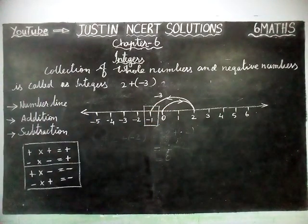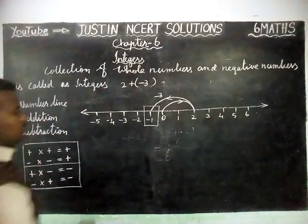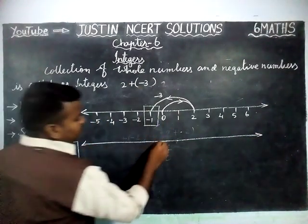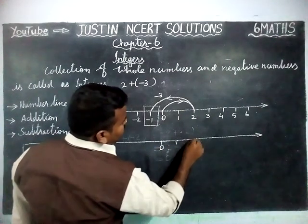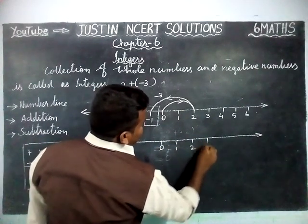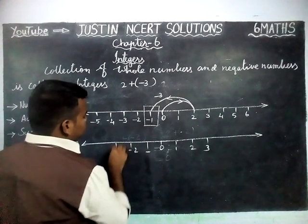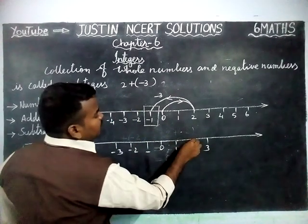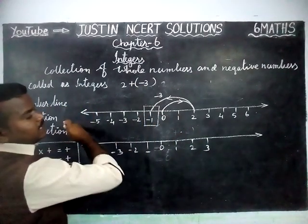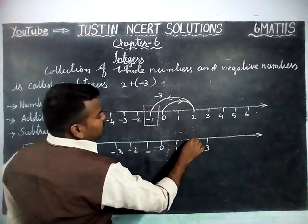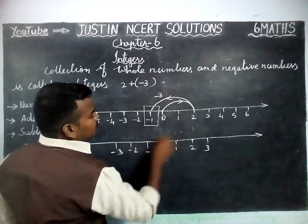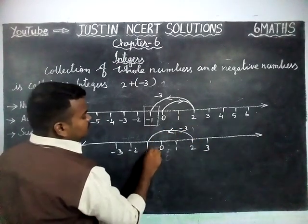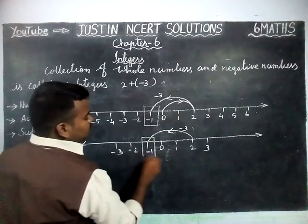The answer is minus 1. Alternatively, starting from 2 on the number line, we move three steps left-hand side: one, two, three — landing on minus 1. So the answer is minus 1. You can follow whichever method is easier for you.